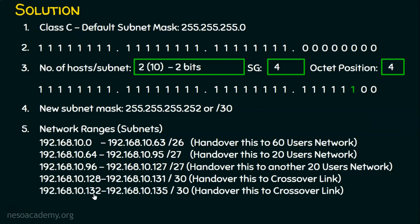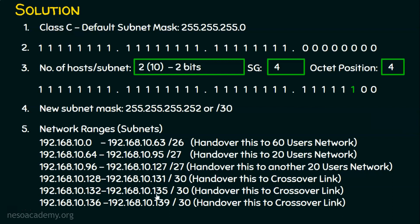Continuing: 132 plus 4 is 136, so the fifth subnet is 192.168.10.132 to 192.168.10.135. Then 136 plus 4 is 140, so the sixth subnet is 192.168.10.136 to 192.168.10.139. All three point-to-point subnets use /30, because we have 30 consecutive ones. The new subnet mask is 255.255.255.252 for all three networks.